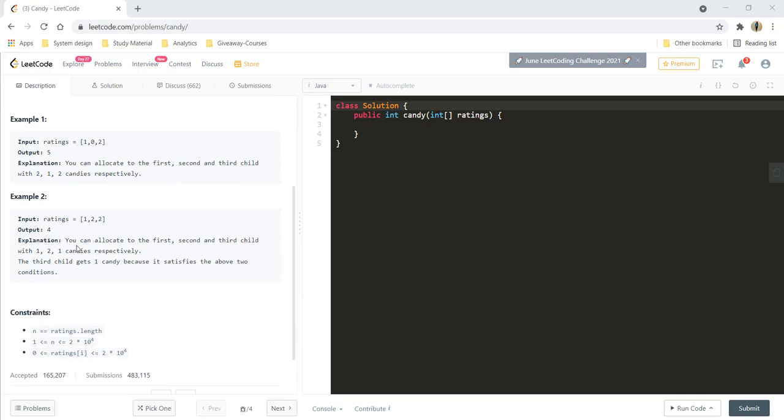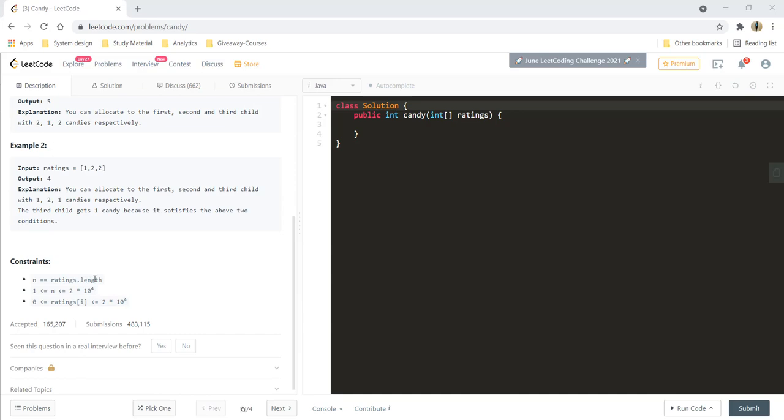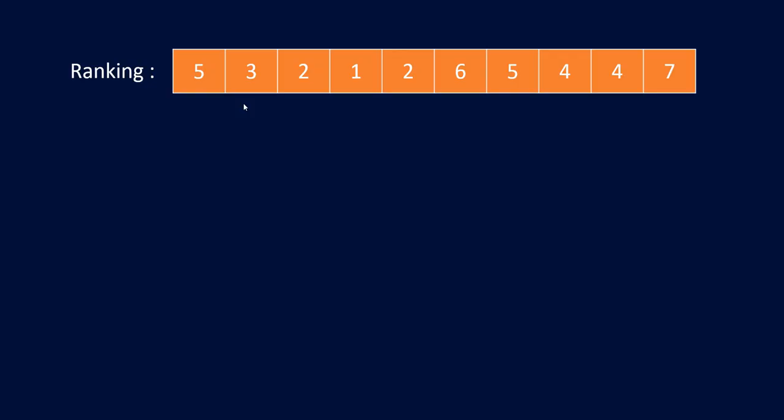Here are some constraints that are given to us. Now let's see how we can solve this question. I have made up an array which has these rankings, and now I need to find the number of candies required to distribute amongst these children.